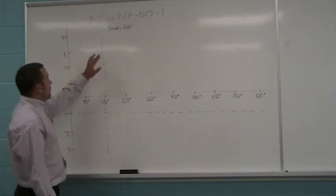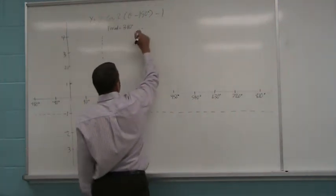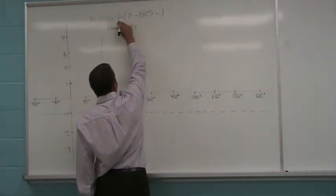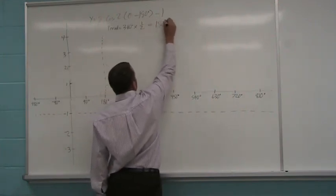Next up, the period. I have a 2 out in front here, so that means I take the 360 degrees, multiply it by the reciprocal of 2, which is 1 half. So that means my period is 180 degrees.